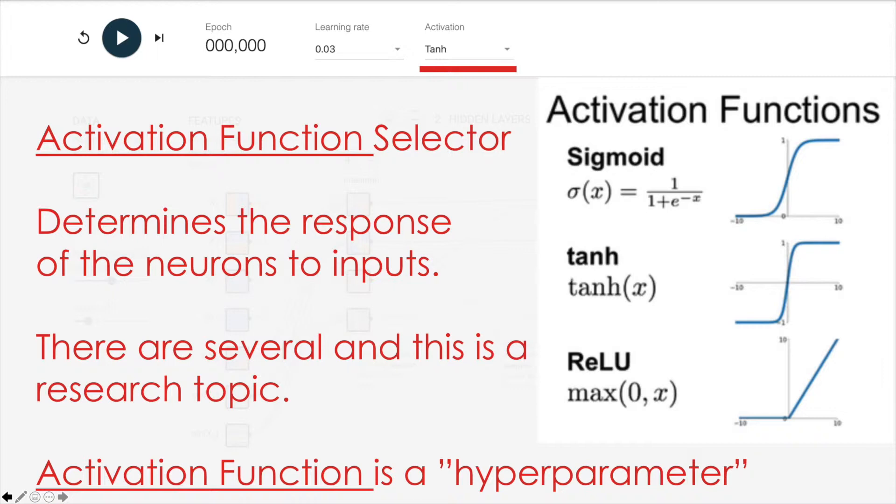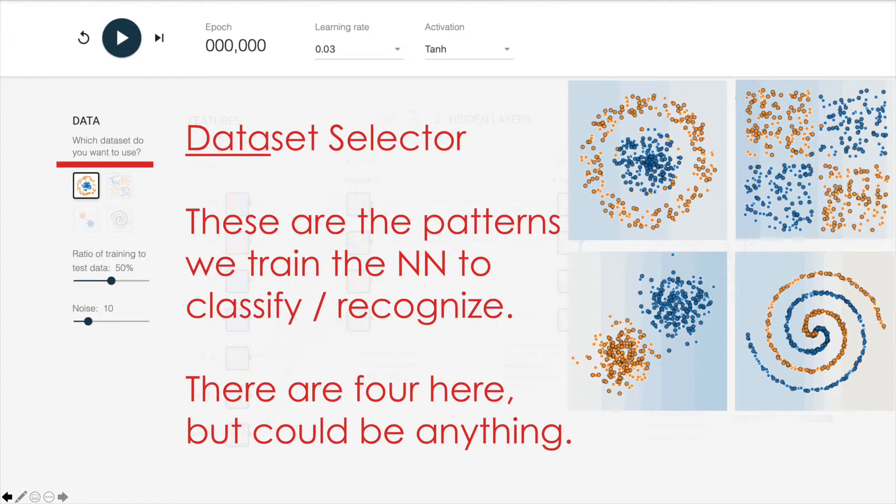Activation functions are also a hyperparameter, although they're an active area of research as well. There's less variation in activation functions, but there is some difference in performance that's obtained by changing them. Now in the TensorFlow Playground, there's a data set selector which gives us four options for point patterns that we want to train the system to recognize. In these quadrants, we have these two kinds of data points we want to classify, the orange dots and the blue dots that are in this pattern. There are four different patterns we want to train the neural network to recognize.